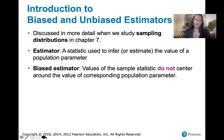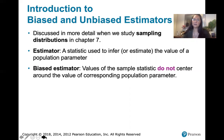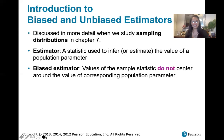Biased estimators are values of the sample statistic that do not center around the corresponding population parameter. When I say do not center, what I mean is if we were to look at the entire population and then create a sample of a certain size — randomly select, let's say, a hundred values — and calculate a sample statistic, then put those values back and select a hundred more and calculate the sample statistic again, doing this over and over, we're creating a list of sample statistics. We want those sample statistics to have a mean equal to the true value of the population parameter.